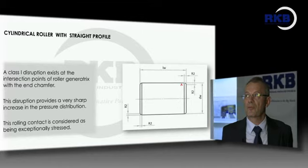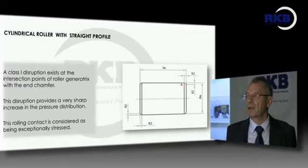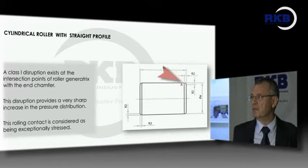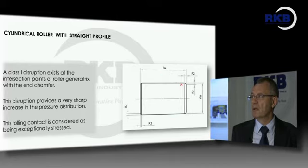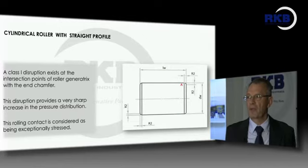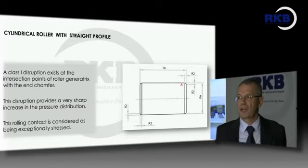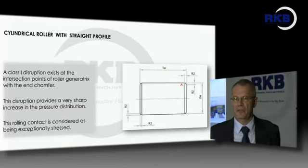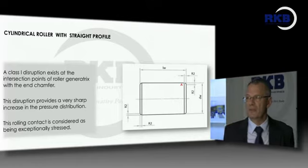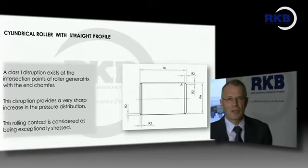For the cylindrical roller with straight profile, this design has a very abrupt discontinuity at point A at the end of the roller. This disruption provides a very sharp increase in pressure distribution, and for this reason, this rolling contact is considered as being exceptionally stressed.